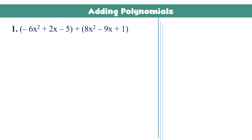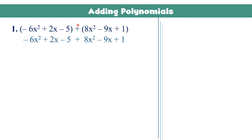Let us have the first example. We have negative 6x squared plus 2x minus 5, plus 8x squared minus 9x plus 1. In adding these two polynomials, it is just the same as removing their parentheses since this is addition. It is a different case for subtraction. Now we may proceed in combining like terms.